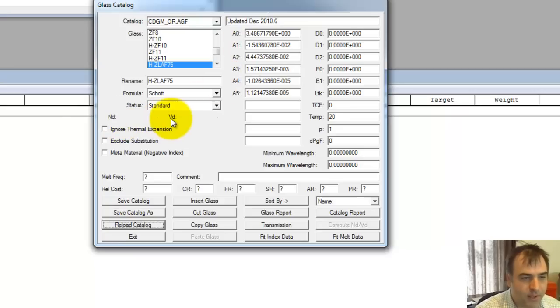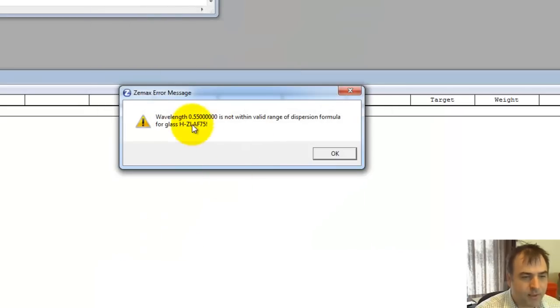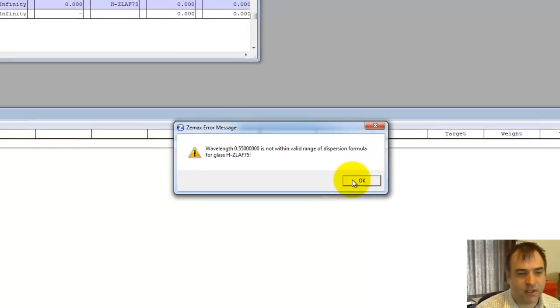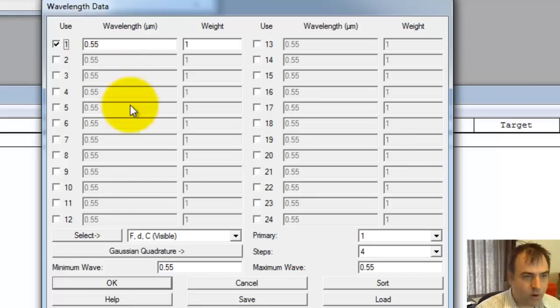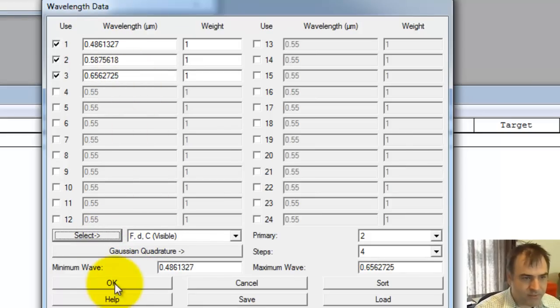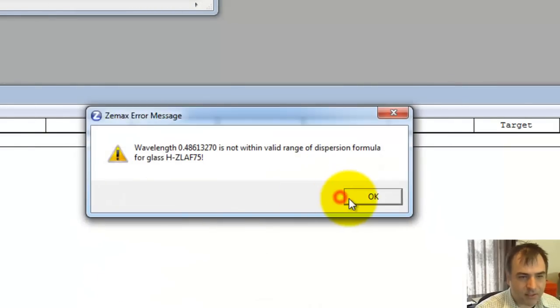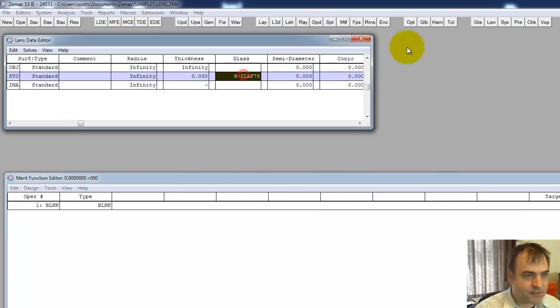Now we're not computing an index and an Abbe. I'm going to hit exit and purposely get this error message. Wavelength 0.55, I've got one wavelength defined in my current lens and it's 0.55. It's not within the valid range of the dispersion formula for HZLAF75. So let's go back. Indeed we're at 0.55. Let's select FDNC: 0.56. It's going to give us these error messages.